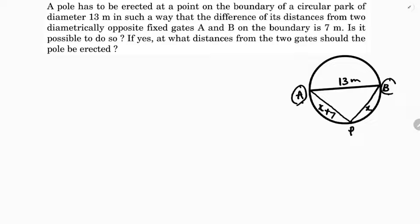The pole will be over here. The pole has to be erected on the boundary. Diameter is 13 in such a way that the difference from the pole to the gates is 7. So I'm considering AP as X plus 7 and BP as X.